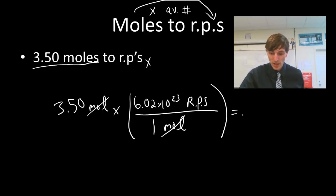So if I punch that in, I'm going to get a gigantic number, 2.11 times 10 to the 24th, representative particles. And you would want to specify what kind of representative particle. Is it an atom? Is it a formula unit? Is it a molecule? For our last example, it would be a formula unit. So that's one way we can do that.